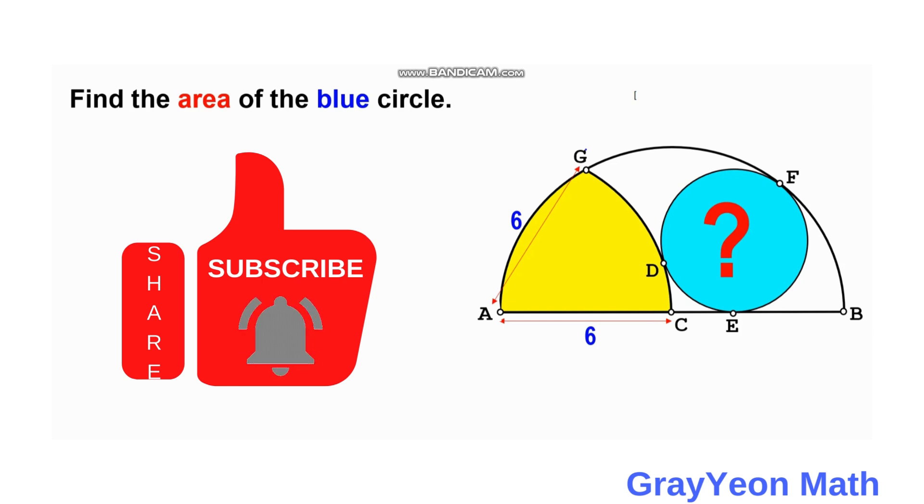While this yellow arc has a center at A with a radius of also 6. And a blue circle lies inside this semicircle and inside this white part, and tangent to the semicircle and the yellow region at F and D respectively.